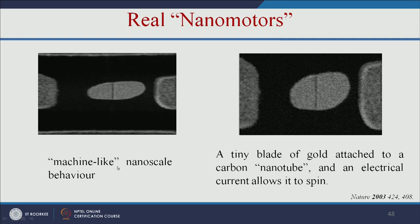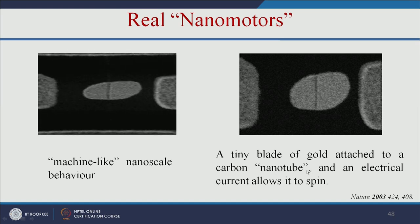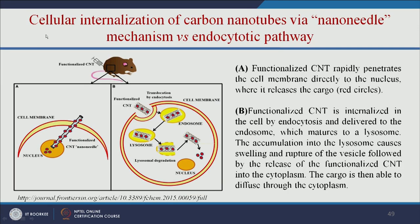Carbon nanotube-based nanomotors can be made with gold attached to a CNT, which spins due to electrical current. Regarding cell uptake, carbon nanotubes can enter cells via two mechanisms: the nano-needle mechanism, where the CNT directly injects into the cell and releases the drug; and the endocytic pathway, where the CNT attaches to the cell, enters an endosome, which combines with a lysosome, degrades, and releases the drug molecules into the cytoplasm.